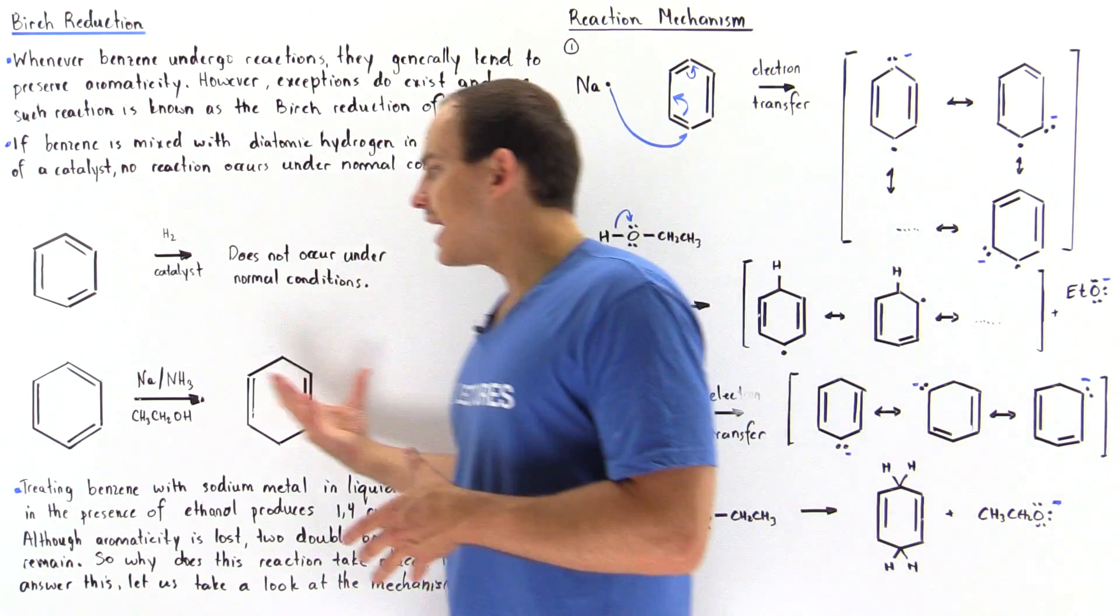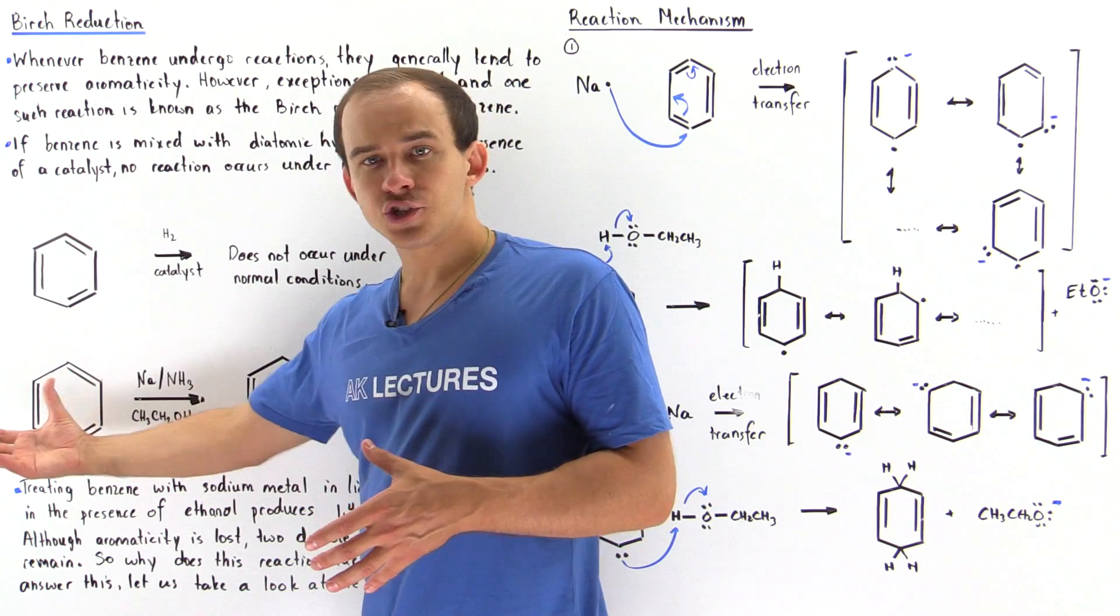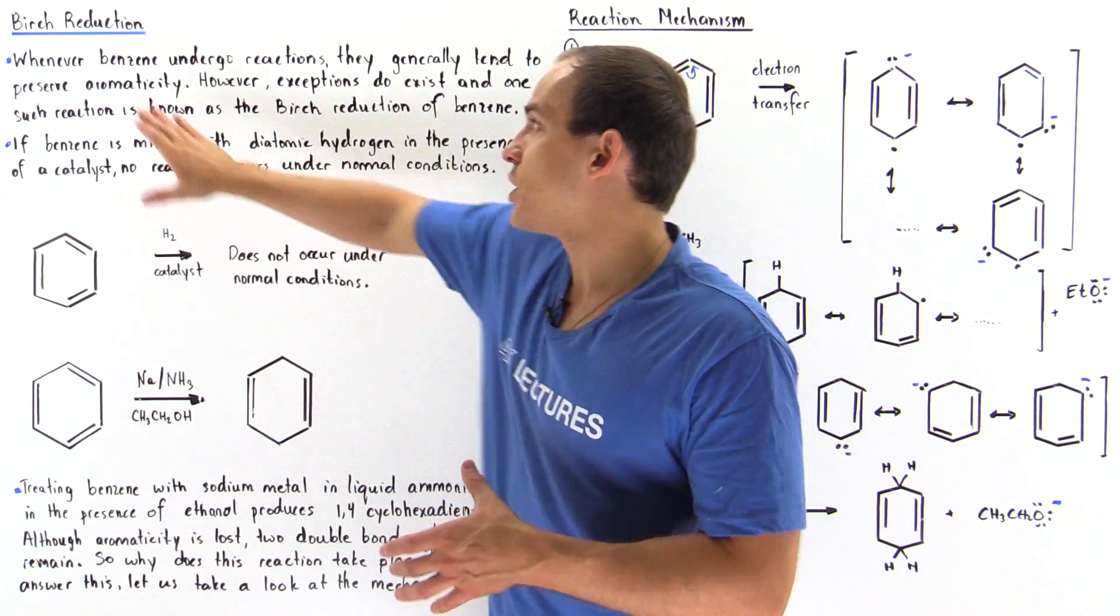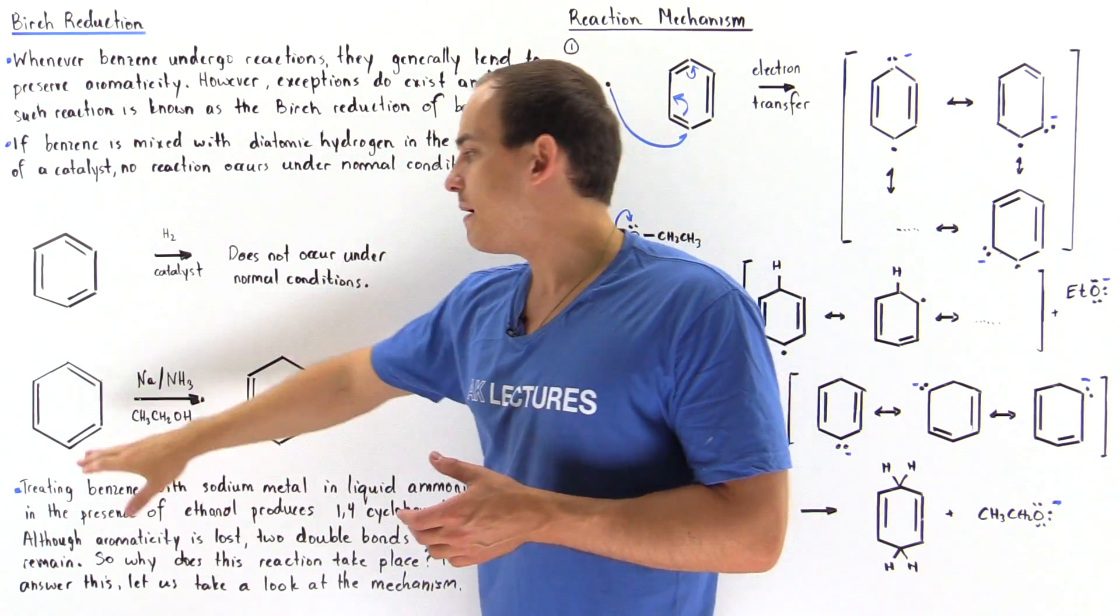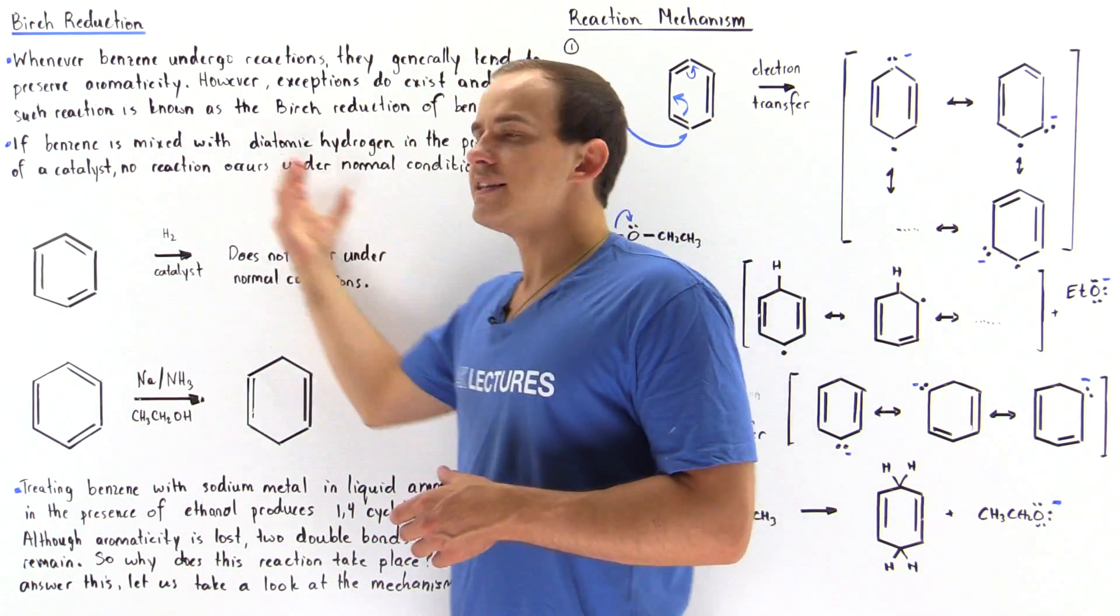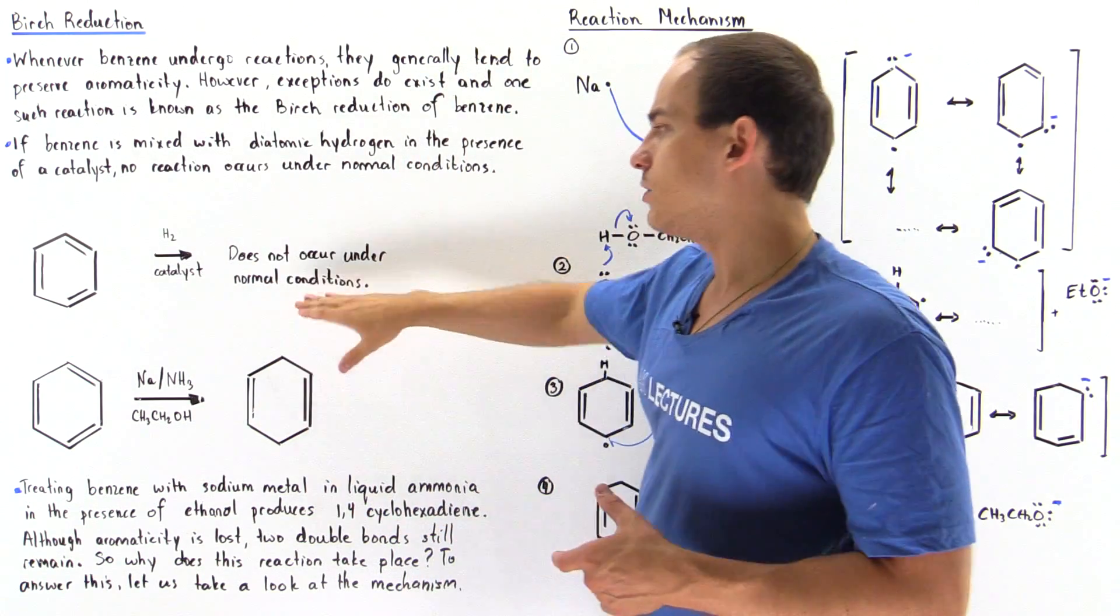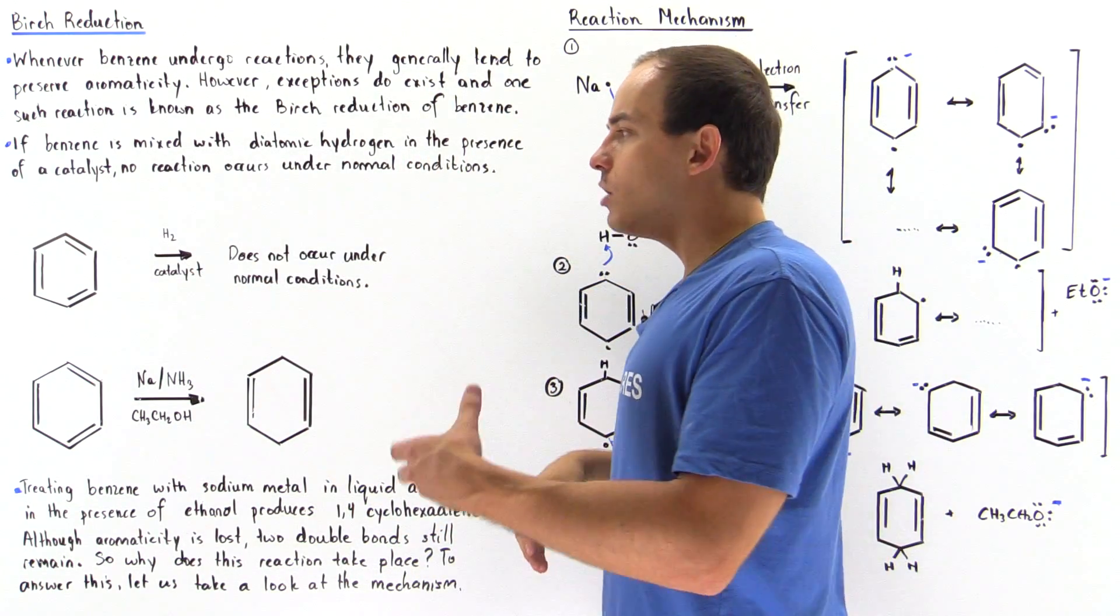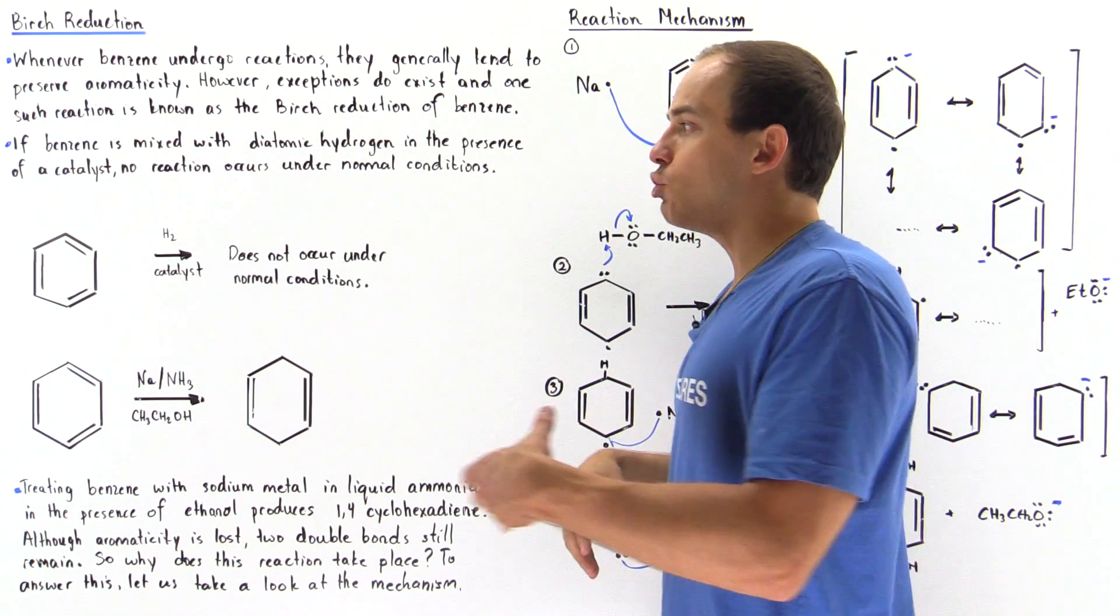So the question is, why does this reaction actually take place? Why does the Birch reduction of benzene take place? But, for example, hydrogenation of benzene does not take place under normal conditions.